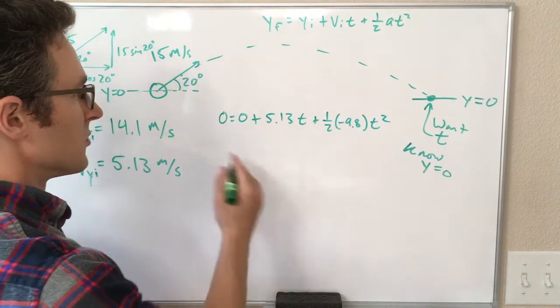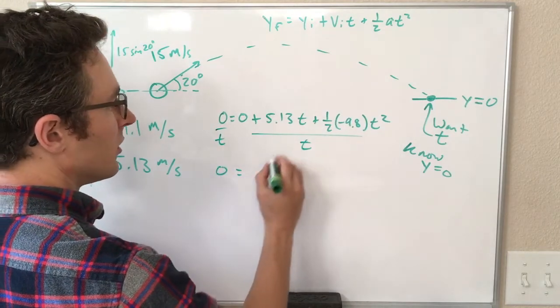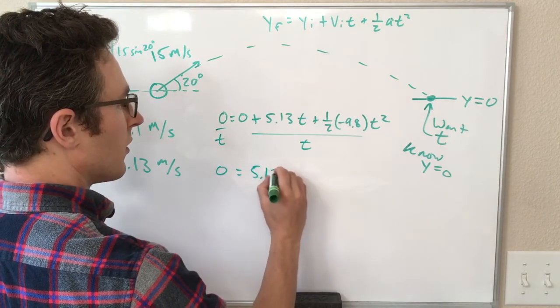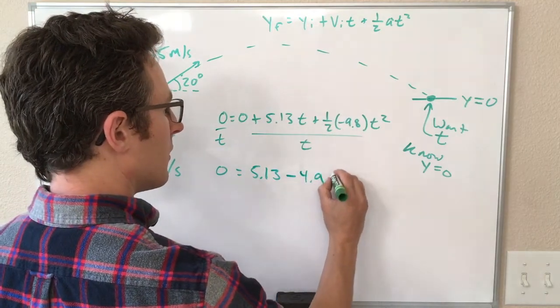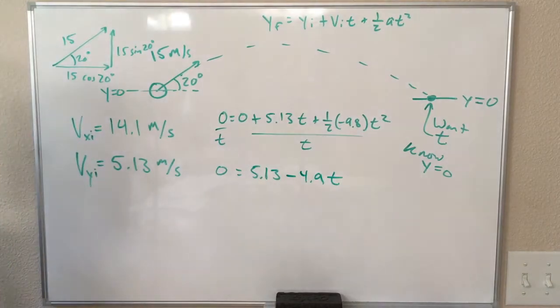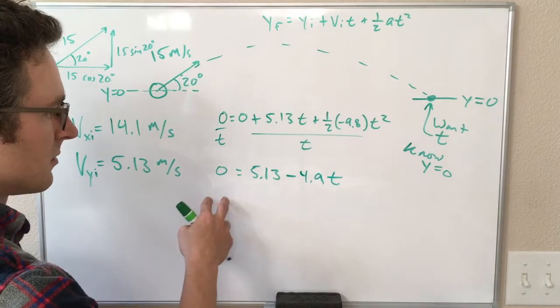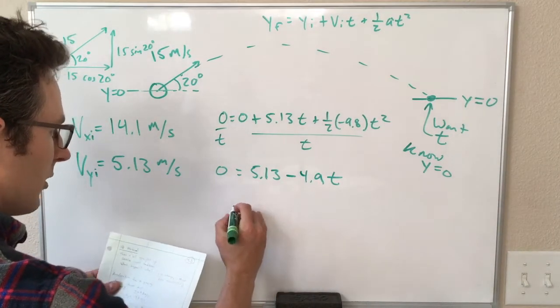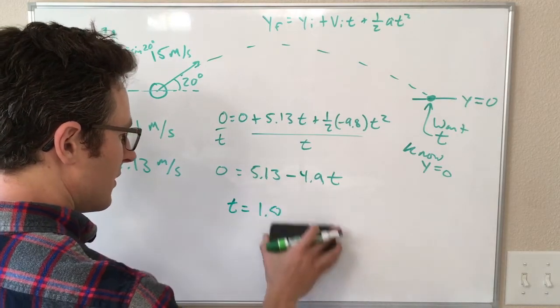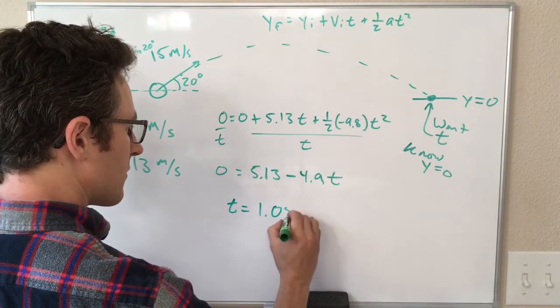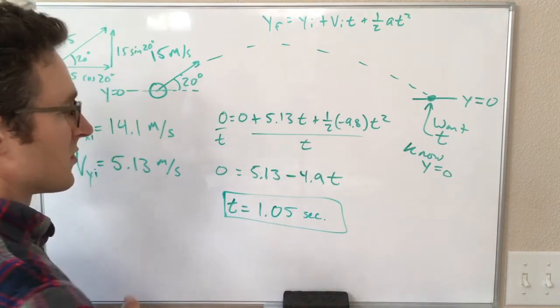We just divide both sides by t, and we get zero equals 5.13 minus, so a half times 9.8 is 4.9t. So 5.13 minus 4.9t equals zero. Add 4.9t to both sides, divide by 4.9, and we get something a little bigger than 1, we get t equals 1.05 seconds. Again, keeping our three sig figs. So this is the answer to part A.